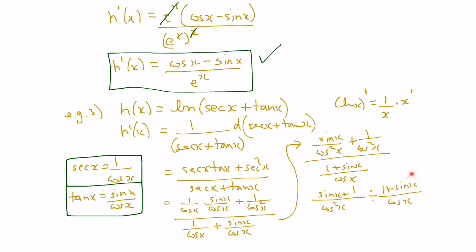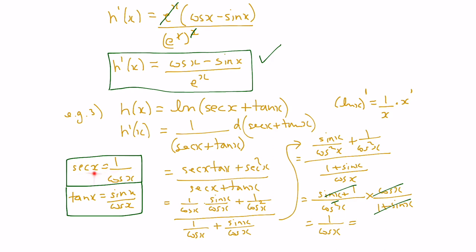To divide, we reciprocate the denominator and multiply, giving us (sin x plus 1 over cos squared x) times (cos x over 1 plus sin x). Since sin x plus 1 and 1 plus sin x are the same, those cancel. We can also cancel one cos x from numerator and denominator, leaving us with 1 over cos x, which is secant x. So the derivative of ln(sec x plus tan x) is sec x.